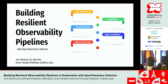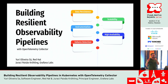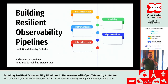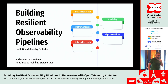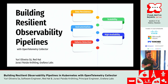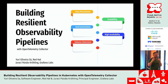Today I'd like to invite you all to embark on a journey to understand how we can build a resilient observability pipeline using the OpenTelemetry Collector. We're going to cover concepts like data persistence, scalability, instrumentation, high availability, and all of that is important in the end to detect our failures.